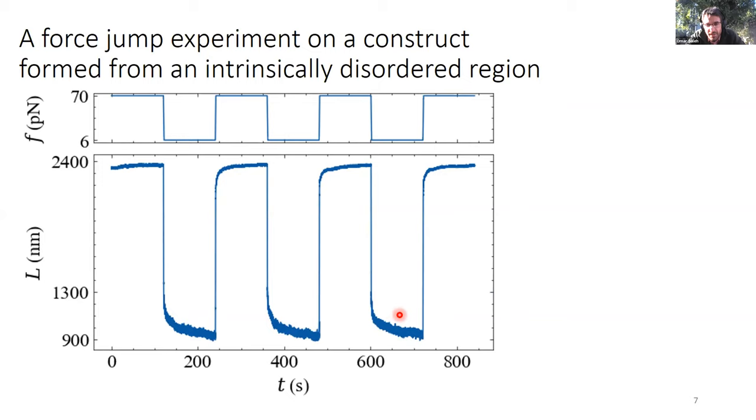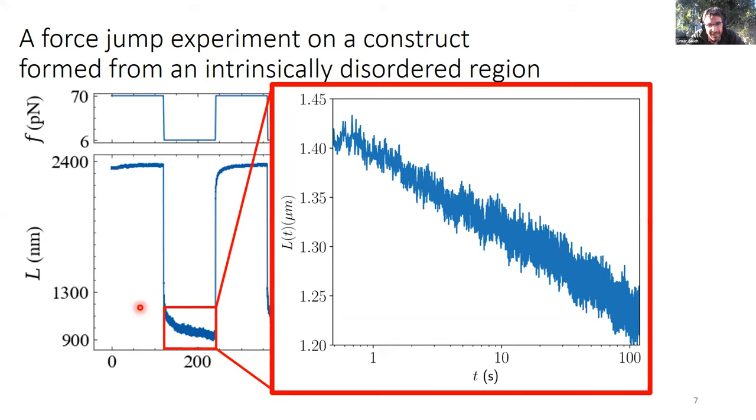If we focus on one of these relaxations and plot it on a log time axis, we see that the extension versus time is changing in what looks like a linear manner on this logarithmic axis. So what that indicates in fact is that the length is decreasing logarithmically with time, well described by the equation shown here, where a key parameter for us today is the slope of the log relaxation d, as sketched there.